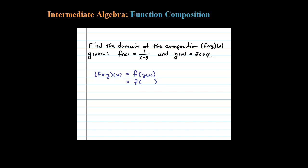What we have here then is F of G of X, which is 2x plus 4. F of X is 1 over X minus 3. This time we're going to plug in for X, 2x plus 4.